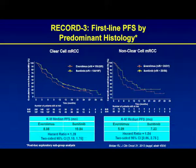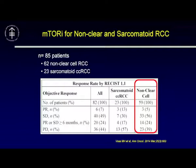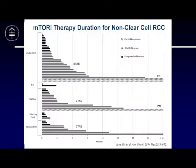Looking at the RECORD-3 trial — everolimus and sunitinib versus sunitinib followed by everolimus — the non-clear cell patients clearly did worse, and patients did a little better with sunitinib than with everolimus. Motzer and his group at Memorial have now pooled the rapalogs together, looking at non-clear cell and sarcomatoid patients. Of the 62 non-clear cell patients given either everolimus or temsirolimus, they found a PR rate of 5% and 56% stable disease. Unclassified patients mostly had stable disease, as did papillary and chromophobe patients, with a few partial responses seen.